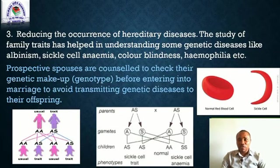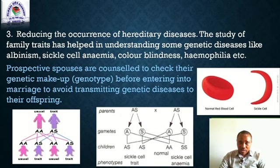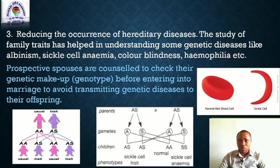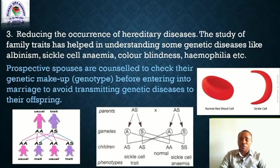Number 3: Reducing the occurrence of hereditary diseases. The study of family traits has helped in understanding genetic diseases like albinism, sickle cell anemia, color blindness, and hemophilia. Prospective spouses are counseled to check their genetic records — their genotypes — before entering into marriage, to avoid transmitting genetic diseases to their offspring.